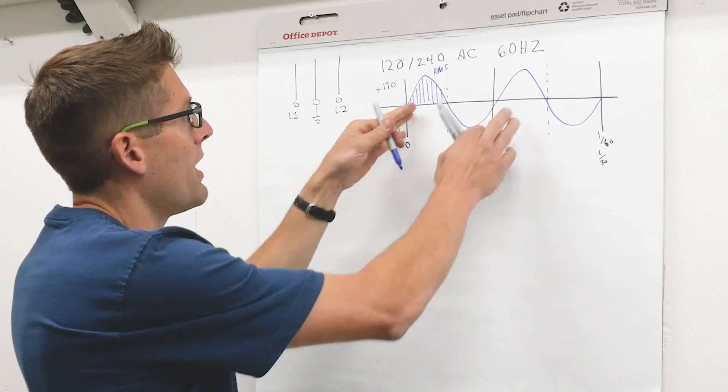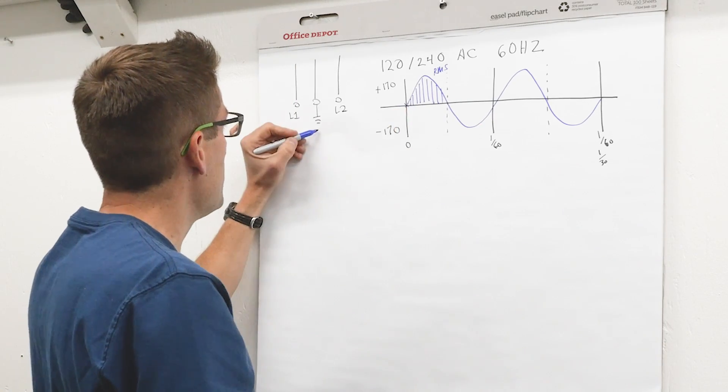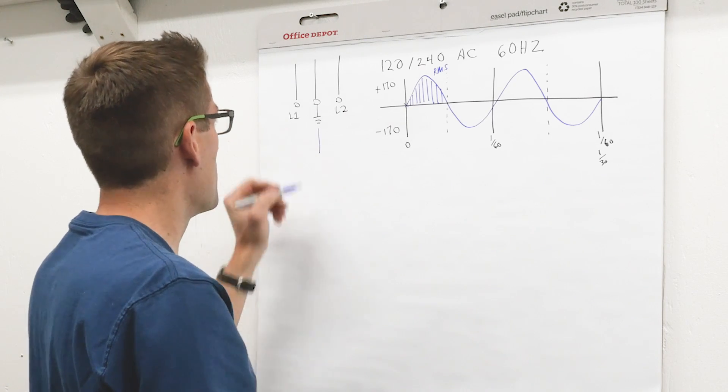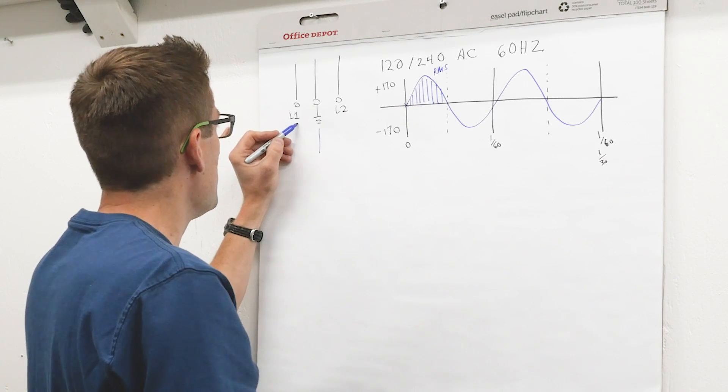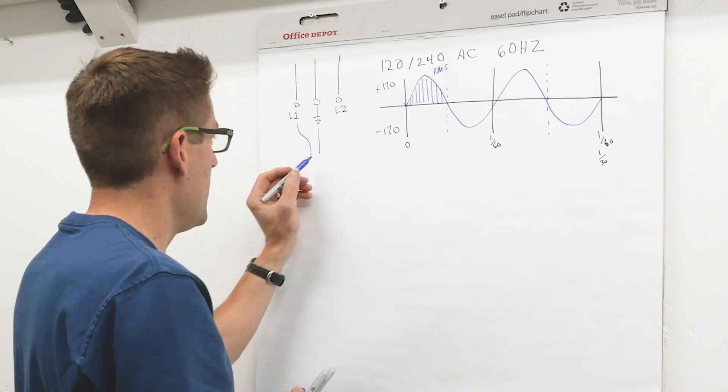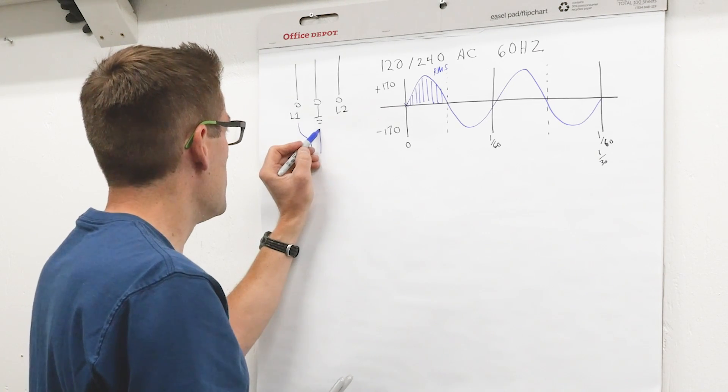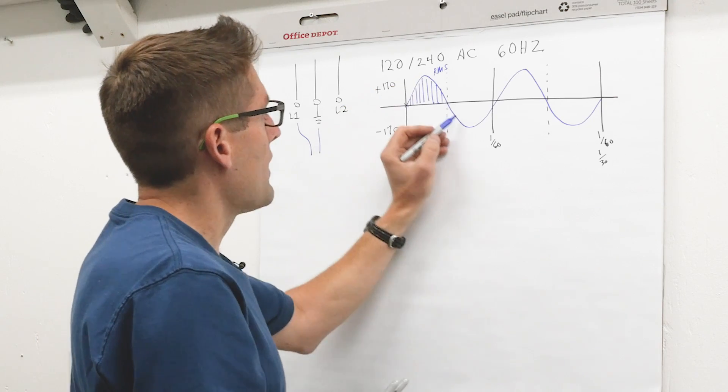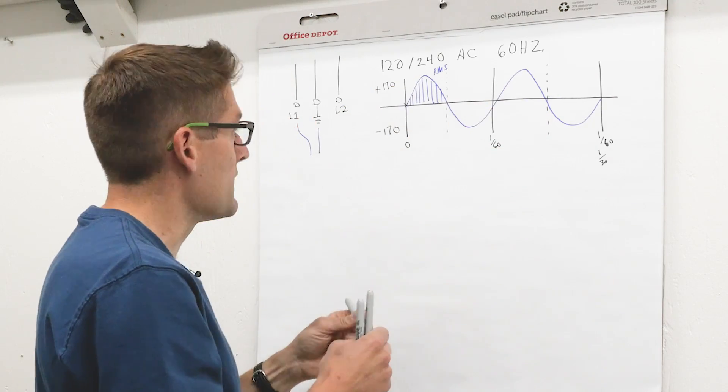So if we're wiring up a 120 volt circuit what you have is the neutral going to your outlet or your appliance and then you have one of the hot legs going to the appliance and that is a potential between L1 and the neutral which averages out to 120 volts AC.